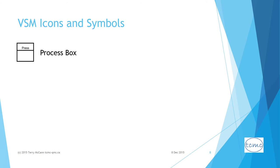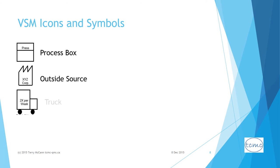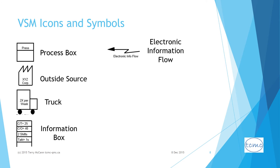Before showing a value stream map of the bicycle assembly process, let's look at the most commonly used VSM symbols. A process box describes an activity for adding value. The outside source symbol identifies suppliers and customers. A truck indicates delivery from a supplier or to a customer. An information box describes information transmitted in the value stream. The electronic information transmission arrow and manual information transmission arrow — typically using paper forms — indicate how information flows.